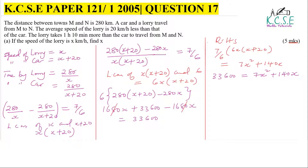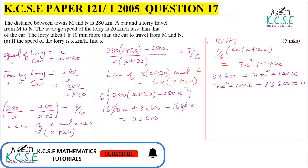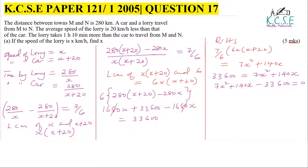We can reorganize this — it is a quadratic equation. Rearranging gives 7X squared plus 140X minus 33,600 equals 0. We can simplify by dividing all through by 7, giving X squared plus 20X minus 4,800 equals 0.